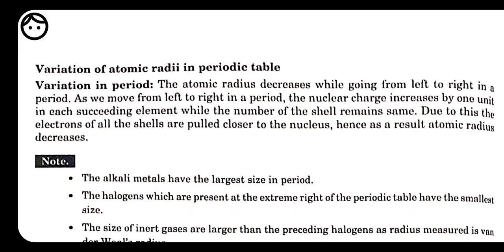Good morning, dear students. We have started Chapter 3 on physical properties of elements. We began with atomic radius — how we calculate or measure the radius of any element. For metals, the atoms are not overlapping; they are simply arranged by touching one another. From the nucleus of one atom to the nucleus of another, we take that length and divide by two to get the metallic radius.